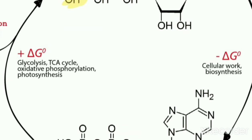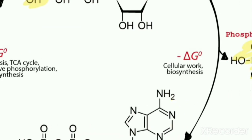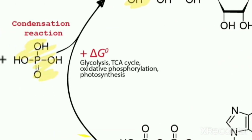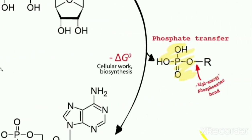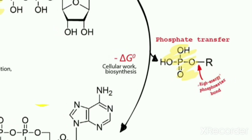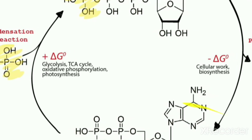The phosphate tail of ATP is the actual power source which the cell taps. The available energy is contained in the bonds between the phosphates, which is released when they are broken. When this bond breaks, energy is released through the addition of a water molecule — this process is called hydrolysis.